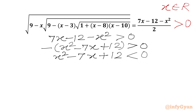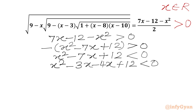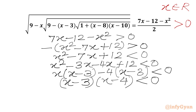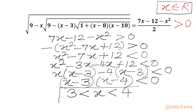Now we will factorize the LHS. We will split minus 7x as minus 3x minus 4x, then we have plus 12. From the first two terms we can take x common, so we get x minus 3 in the bracket. Then we take minus 4 common from the last two terms and get the same bracket x minus 3. So x minus 3 times x minus 4 — this product should be negative for x to be real. So x should lie in the interval 3 and 4, where equality may hold true for the boundaries.